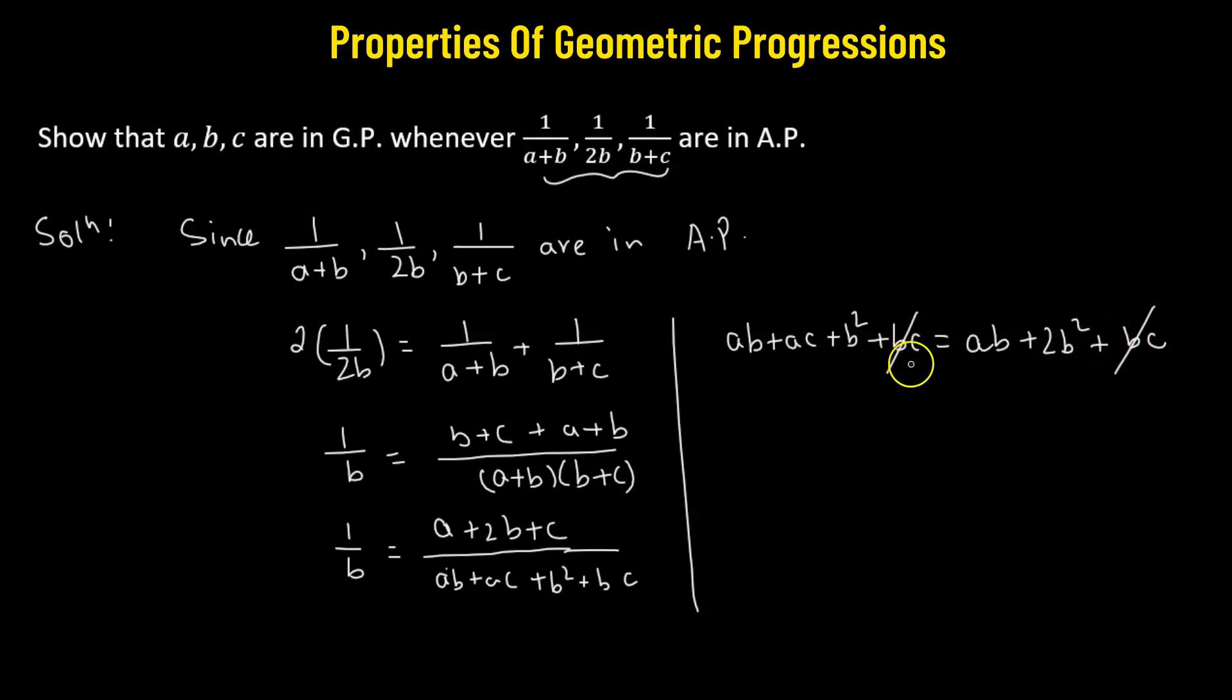So here, bc gets cancelled out. ab also gets cancelled out. So we have ac plus b squared equals 2b squared. Or we have ac equals 2b squared minus b squared.